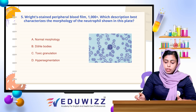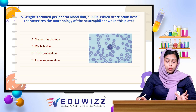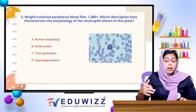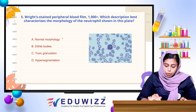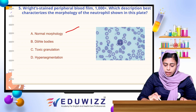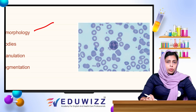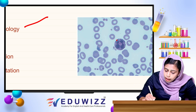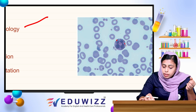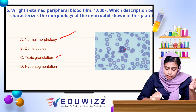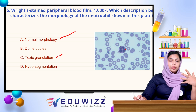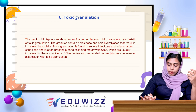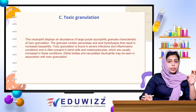Next question: a Wright-stained peripheral blood smear is shown in this picture. Which description best characterizes the morphology of neutrophils shown? Options: normal morphology, Döhle bodies, toxic granulation, and hypersegmentation. It is not normal morphology. Döhle bodies — possible. Toxic granulation is a chance. Hypersegmentation is not likely here; that requires 5 to 6 lobes. The answer is toxic granules. These granules display evidence of large purple azurophilic granules characteristic of toxic granulation.